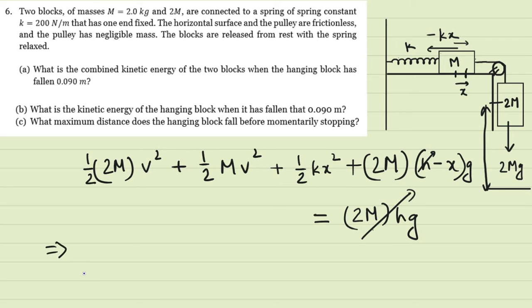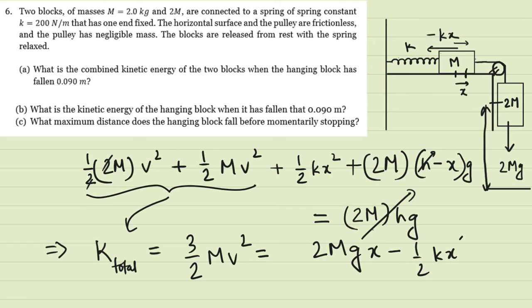So what we have is the combined kinetic energy, k total equal to, so 2 cancels 2, and then 1 plus half is 3 by 2 m v squared. And this is given by, we have 2mgx minus half kx squared.